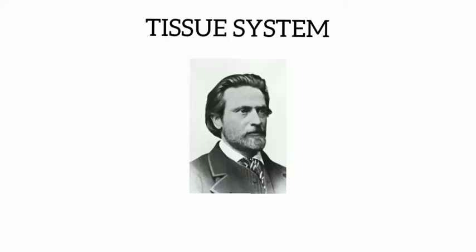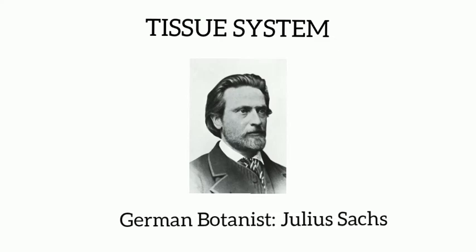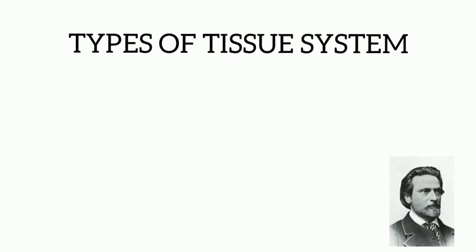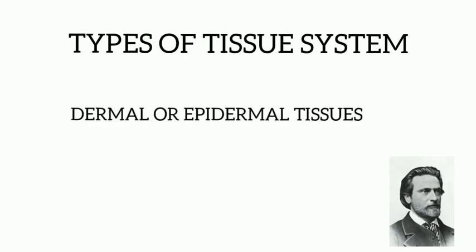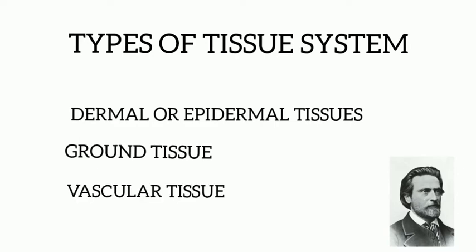Next, we move on to tissue system. Tissue system was classified by a German botanist named Sachs in 1875. He classified tissue systems into three types: dermal or epidermal tissue system, ground tissue system, and vascular tissue system.